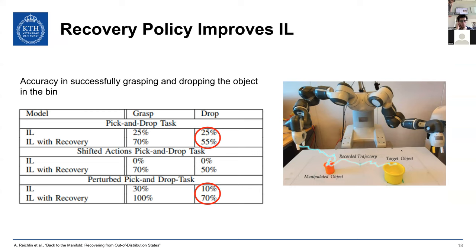We compared our model with a baseline normal imitation learning policy and some classical offline RL formulations, though those generally required much more data. Adding the recovery policy significantly increased performance on the standard pick-and-drop task. The recovery also helped when the robot was forcefully brought out-of-distribution by simulating an external force — not a rare case in real-world deployment. In both conditions, the recovery policy substantially increased overall model performance.